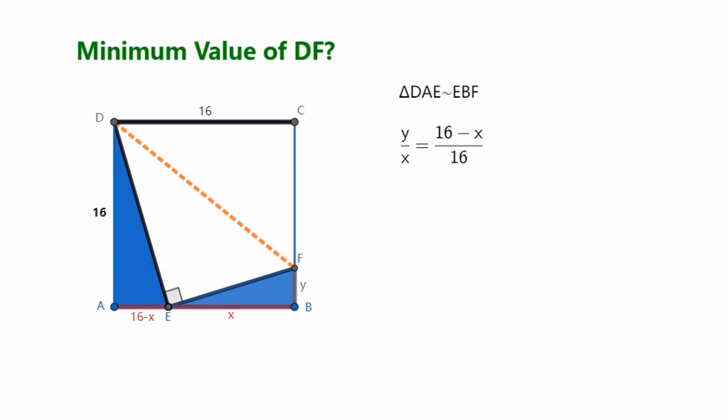So we get the equation Y over X is equal to 16 minus X over 16. We carry out the transfer merge to obtain, Y is equal to 16 minus X over 16 times X. This is a quadratic function, Y is equal to negative 1/16th X squared plus X.